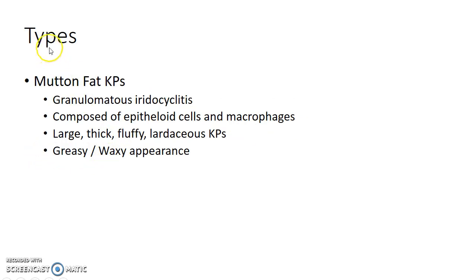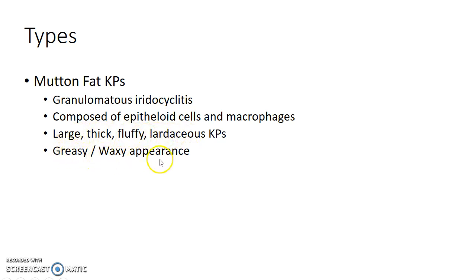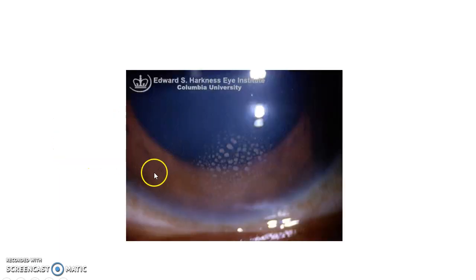Mutton fat keratic precipitates are seen in granulomatous iridocyclitis. They are composed of epithelioid cells and macrophages. They are large, thick, fluffy, and lardaceous keratic precipitates with a greasy or waxy appearance. This is how a patient with mutton fat keratic precipitates presents to you.